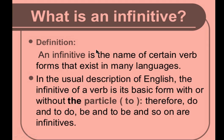Next we will see the infinitive. An infinitive is the name of a certain verb form that exists in many languages. In English, the infinitive of a verb is its basic form. Without the particle, the basic form is just the verb — for example, 'do' or 'be'. With the particle 'to', it becomes 'to do' or 'to be'. So an infinitive is formed by adding the word 'to' before the basic verb form.